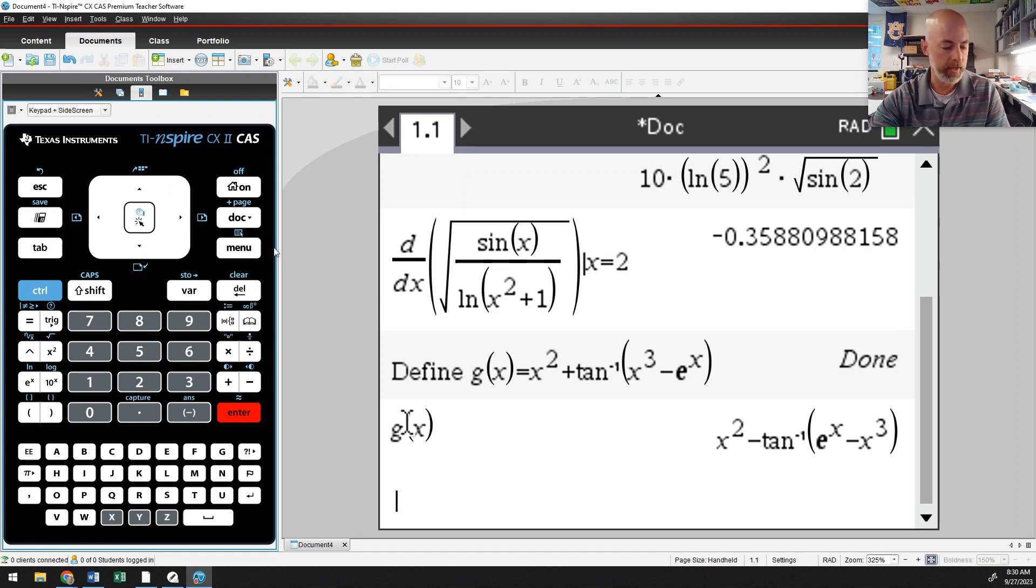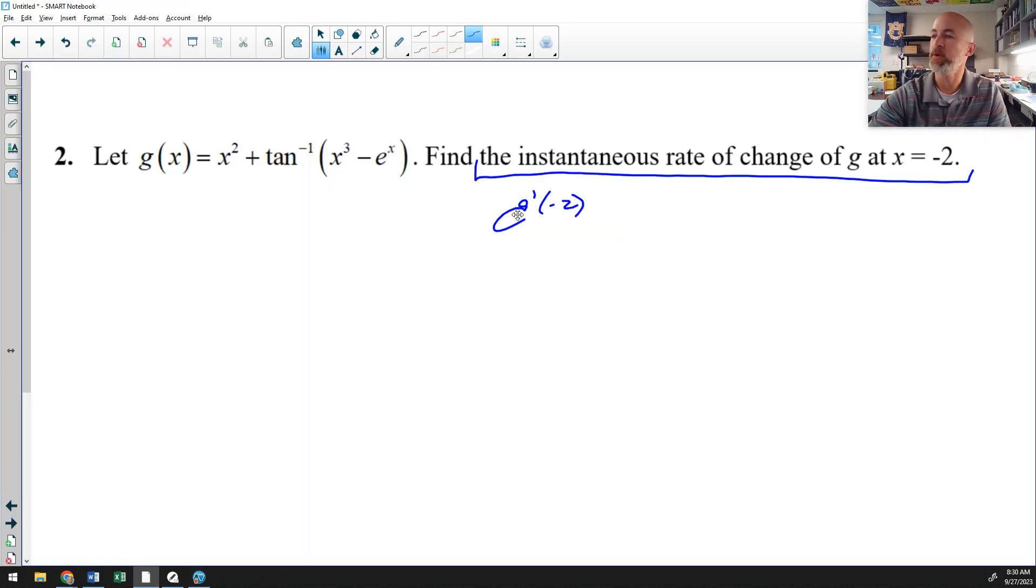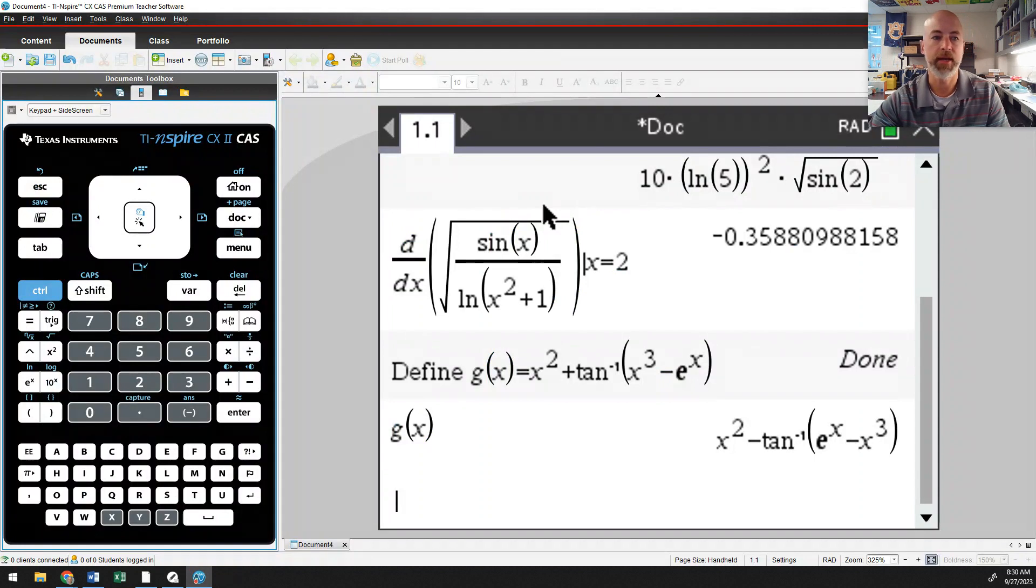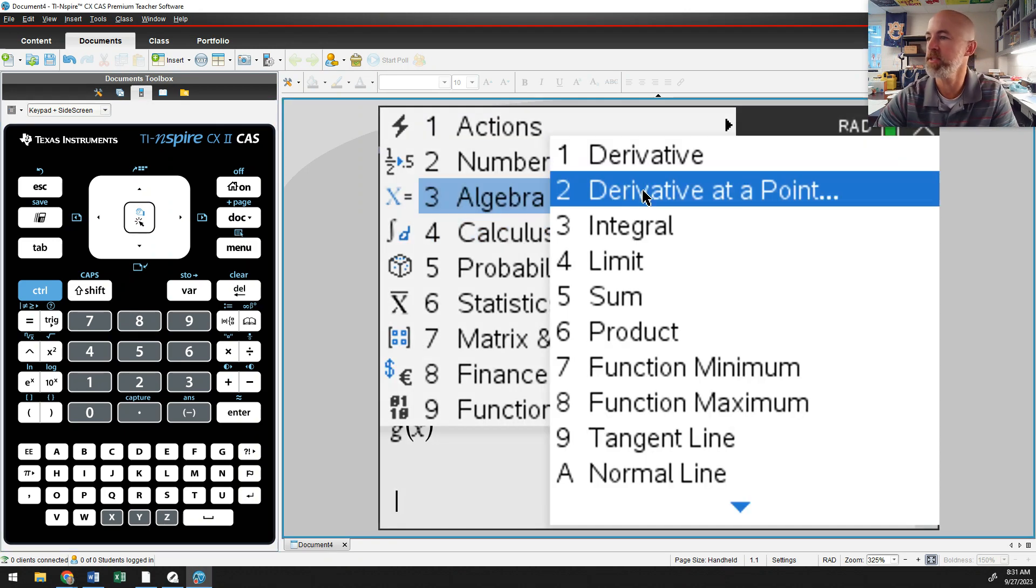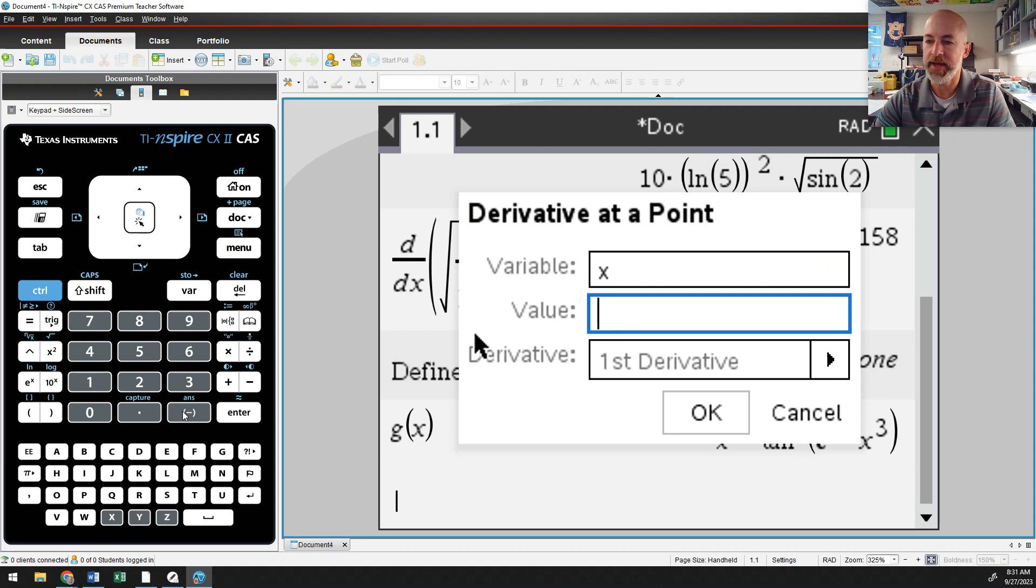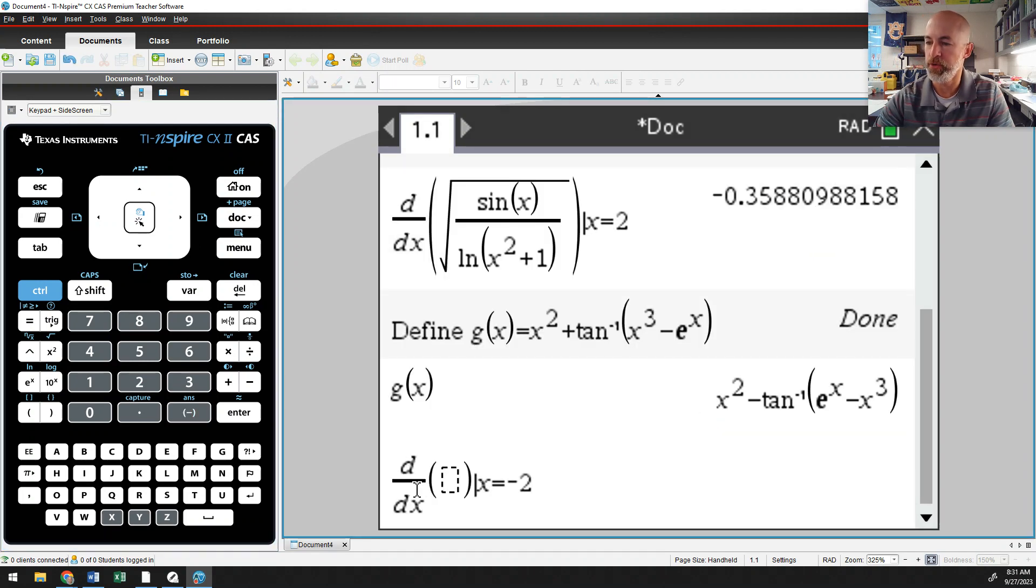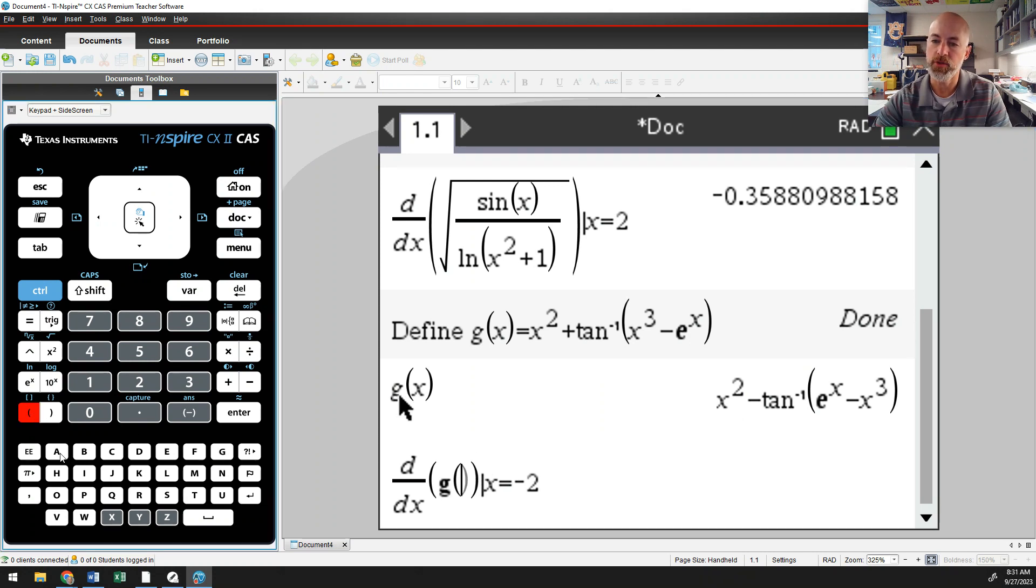So that is g of x. We're not going to worry about any errors there. And I want to compute g prime of negative two. So we defined g of x. And now I need to compute the derivative at a point. So now it's back to menu, calculus, derivative at a point. This time we're plugging in negative two to the first derivative. And double check that, the derivative with respect to x of a function such that x is negative two. This time, all I have to do is say g of x.